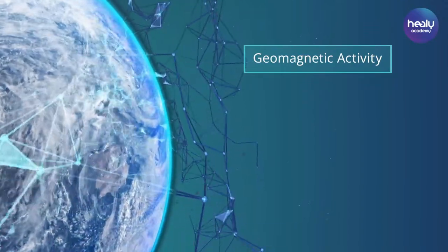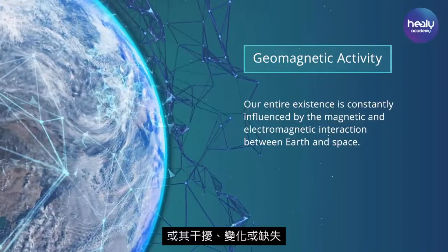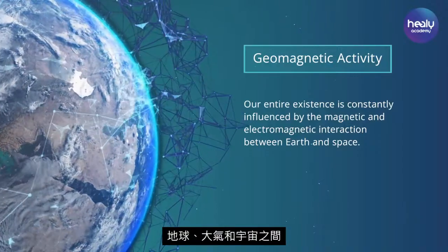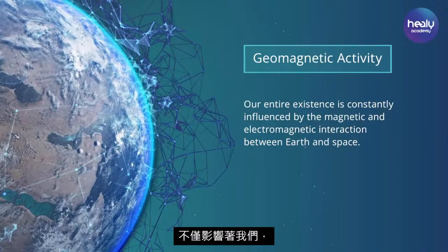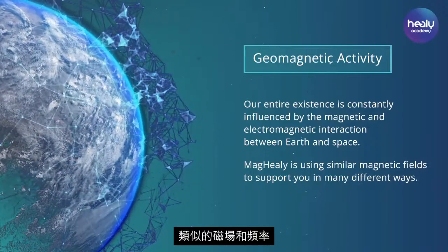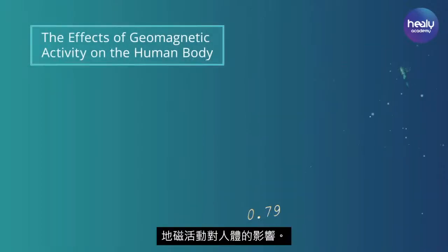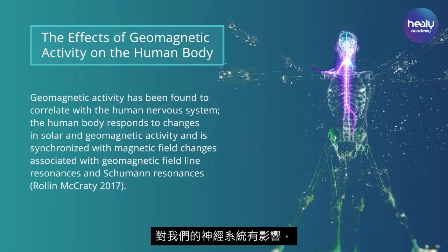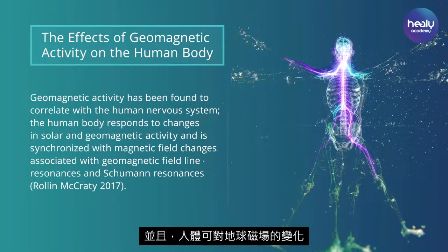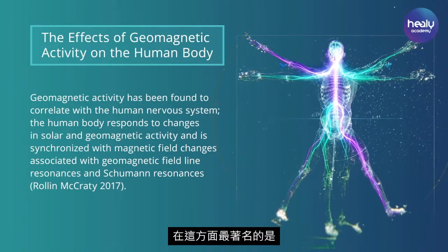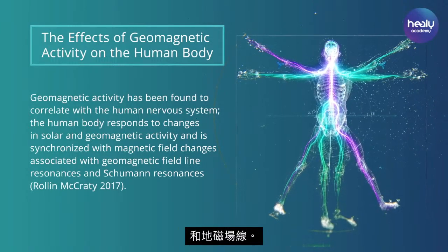Larger, naturally occurring electromagnetic fields — or their disturbance, change, or absence — can have a strong influence on how we feel. For example, the continuous interactions between Earth, the atmosphere, and the universe are affecting not just us, but also our environment. Using Maghealy, it is now possible to use similar magnetic fields and frequencies to support you. It has also been proven that geomagnetic activities have an influence on our nervous system, and that the human body can react sensitively to changes in the Earth's magnetic field or to solar activities. The best known in this context are the so-called Schumann resonances and the geomagnetic field lines.